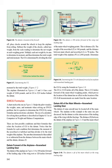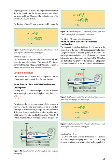Datum After the Main Wheels — Nose Wheel Landing Gear: The datum of some aircraft may be located aft of the main wheels. Using the same airplane, the datum is now at the intersection of the trailing edge of the wing with the fuselage. The distance D between the datum and the main wheel weighing points is 75 inches. The weight of the nose wheel (F) is 340 pounds, the distance between main wheels and nose wheel (L) is 78 inches, and the total net weight (W) is 2,006 pounds. Using the formula in figure 3-11, the CG location is a negative value — 88.2 inches forward of the datum — placing it 13.2 inches forward of the main wheels, exactly the same location as when measured from other datum locations.